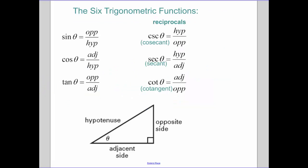So our six trig functions, and these three—sine, cosine, and tangent—should look familiar. Sine is opposite over hypotenuse. Cosine is adjacent over hypotenuse. And tangent is opposite over adjacent.